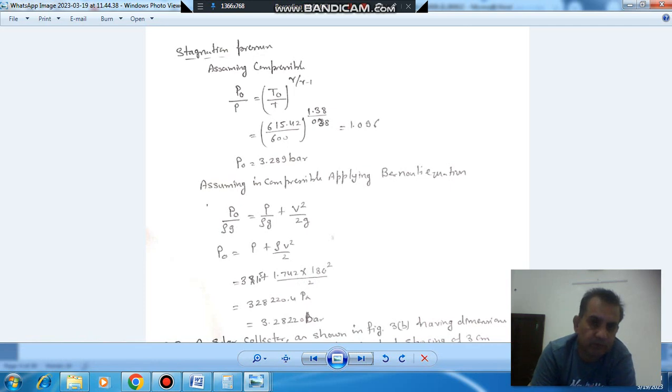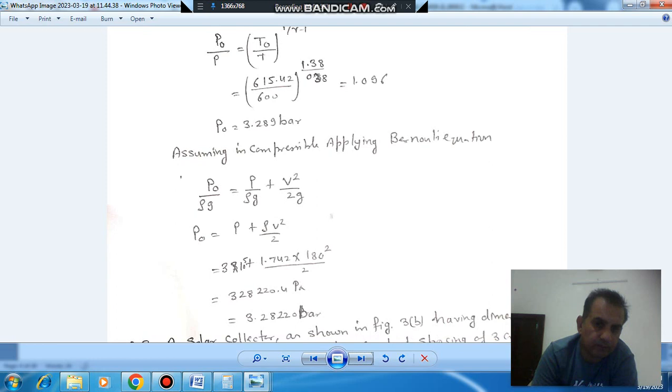Then for incompressible flow, we can apply Bernoulli's equation to find out stagnation pressure. At stagnation conditions the velocity is 0, so there will be no velocity term. The Bernoulli equation will be P0 by rho plus P by rho plus V squared by 2. Rho at the initial and final will remain same because flow is incompressible. So P0 will be equal to P plus rho V squared by 2. P is 3 bar or 3 into 10 to the power 5 Pascal. Rho is 1.742 and V is 180 meters per second. So P0 comes out as 3.28 bar.